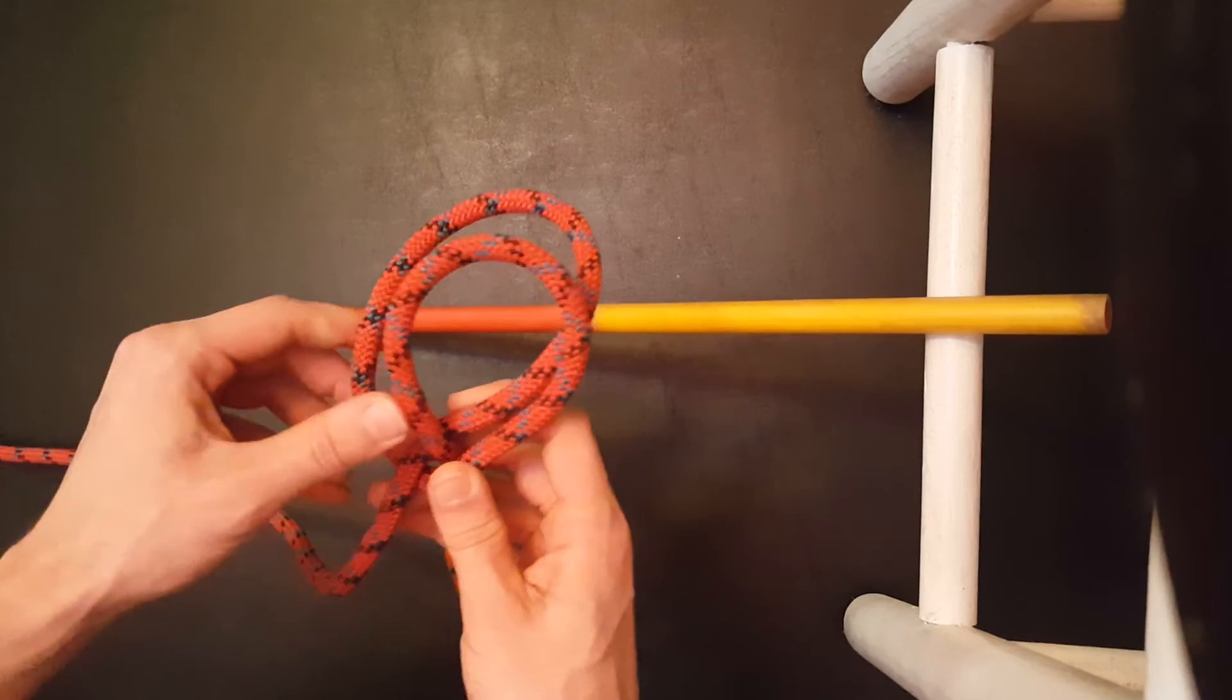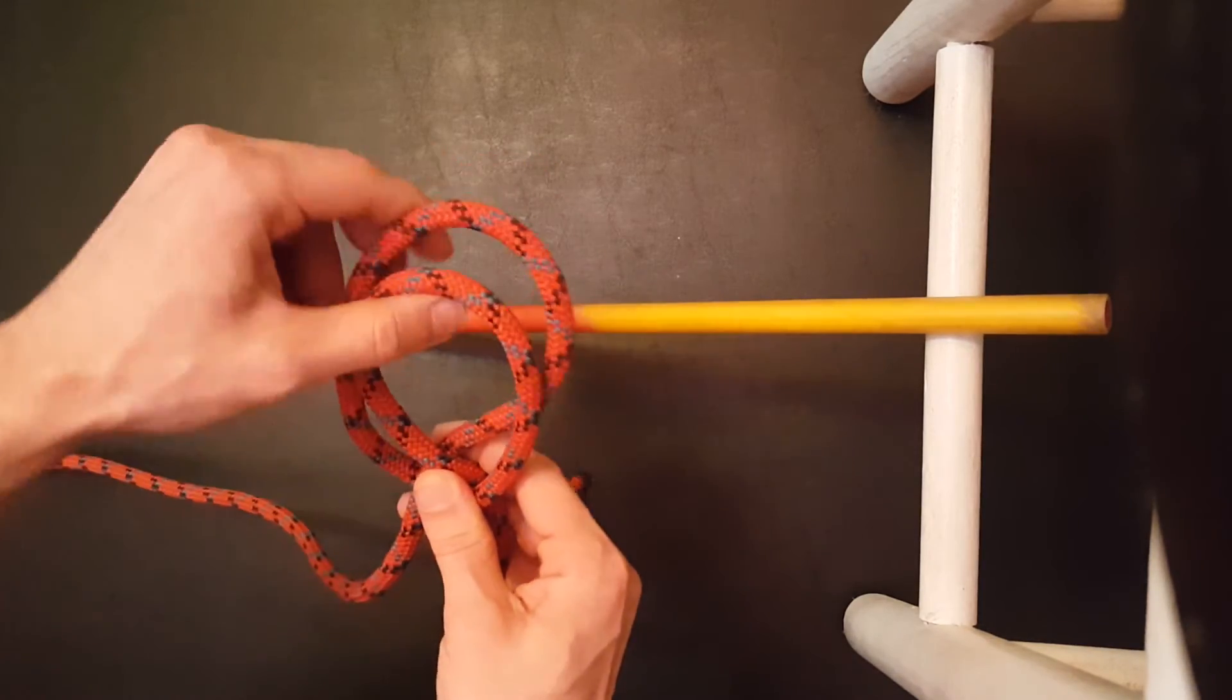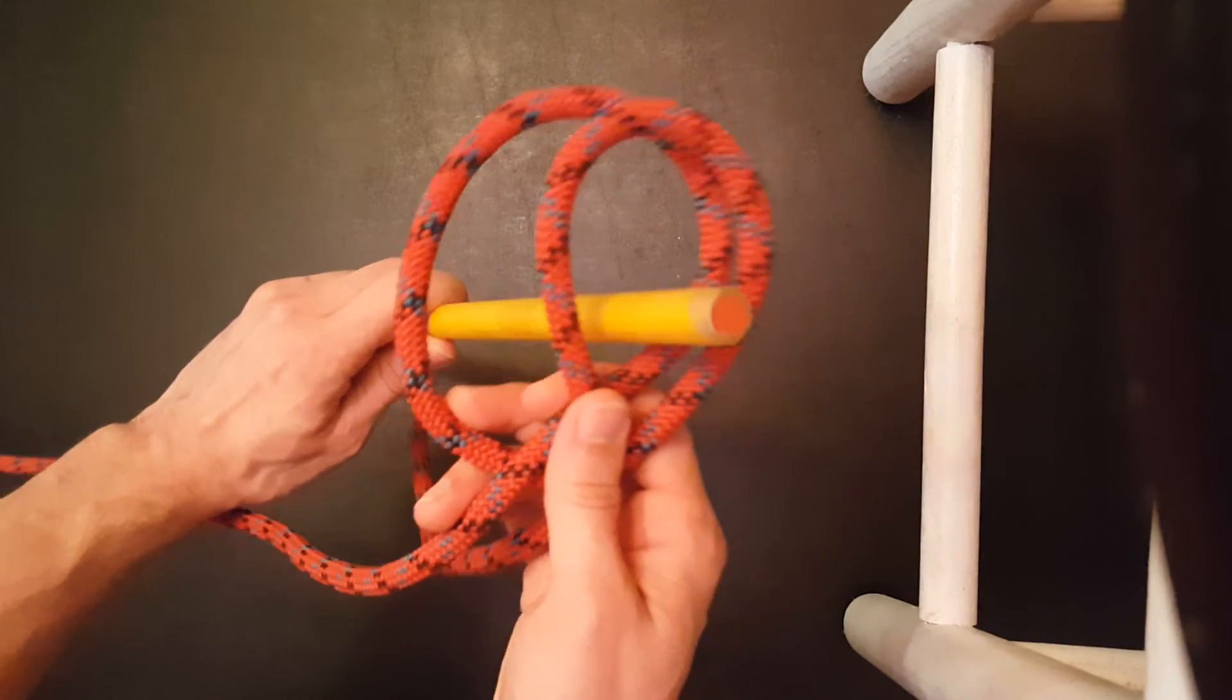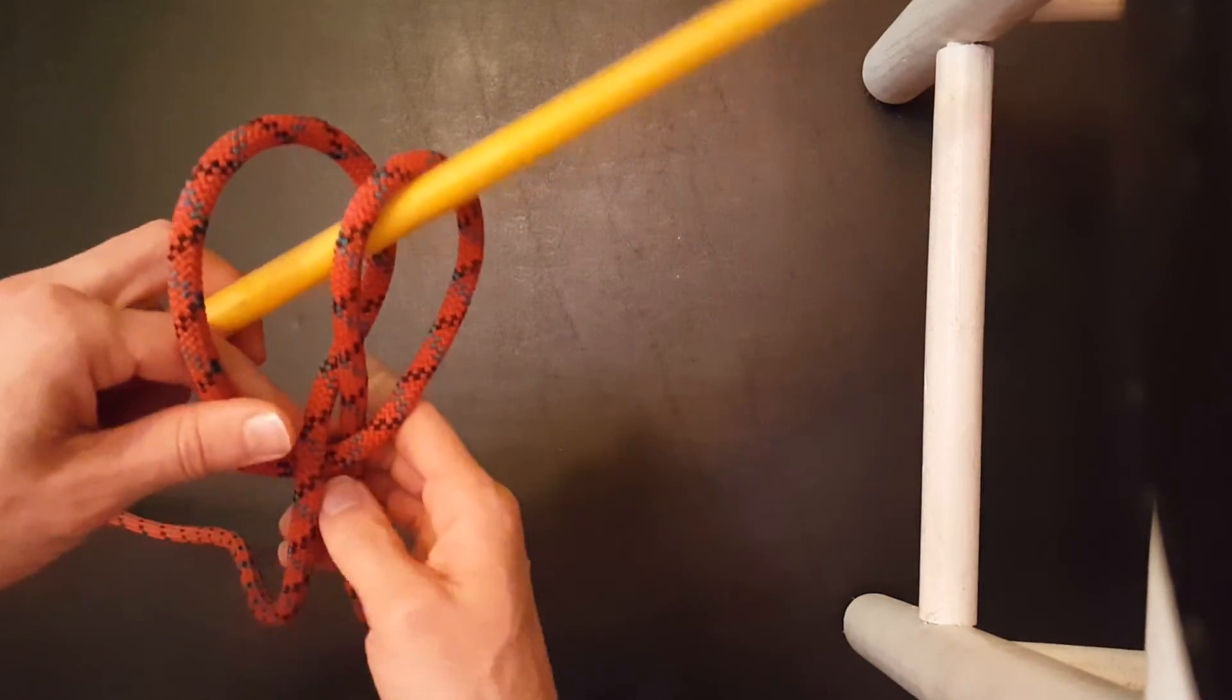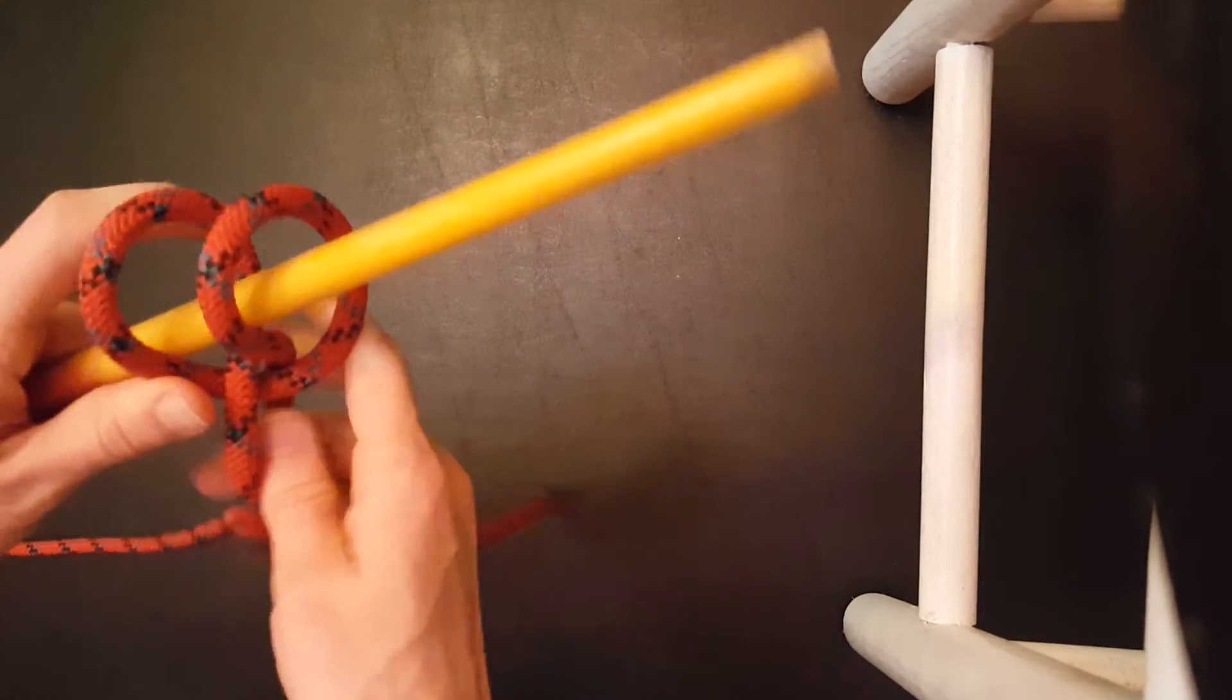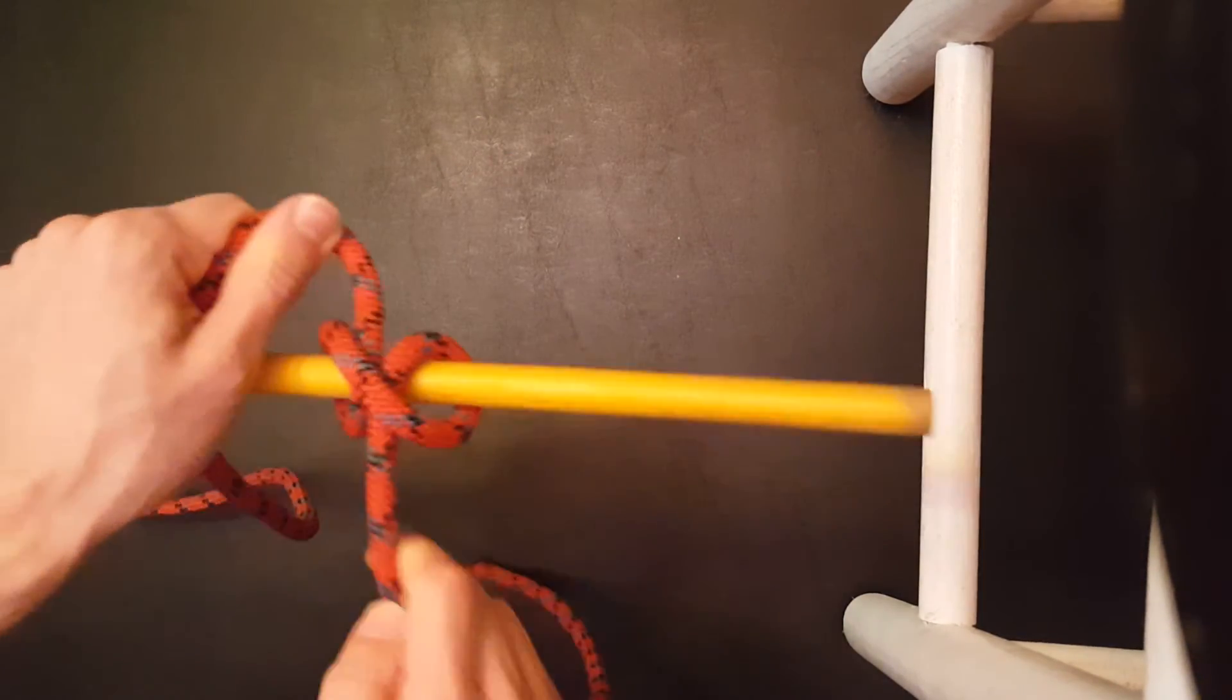All we're going to do is take these two loops that have been overlapped and stick our object on there, bloop. And then when we tighten this bad boy down, we have created our clove hitch.